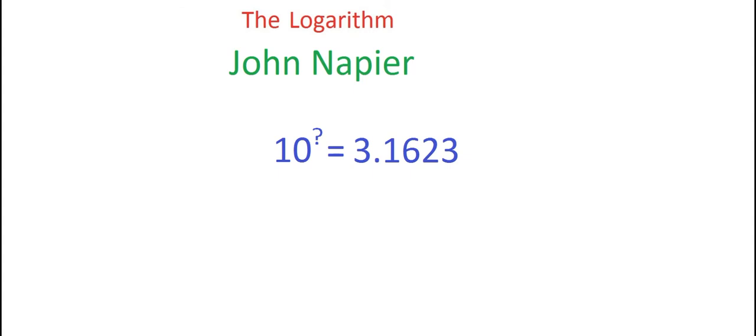What power of 10 should we use for this number 3.1623? Well, to the accuracy of 4 decimal places, 3.1623 is the square root of 10. That means when I multiply 3.1623 by itself, the answer is 10.